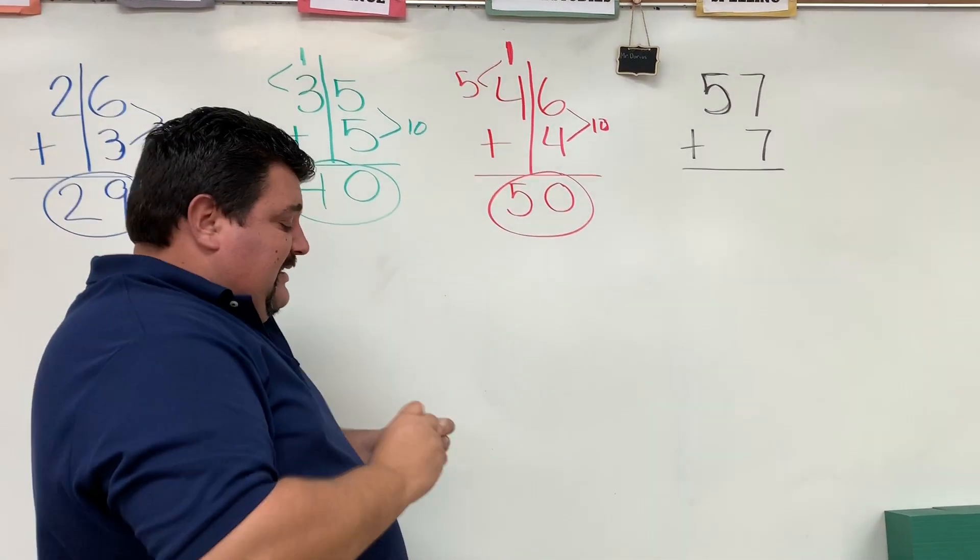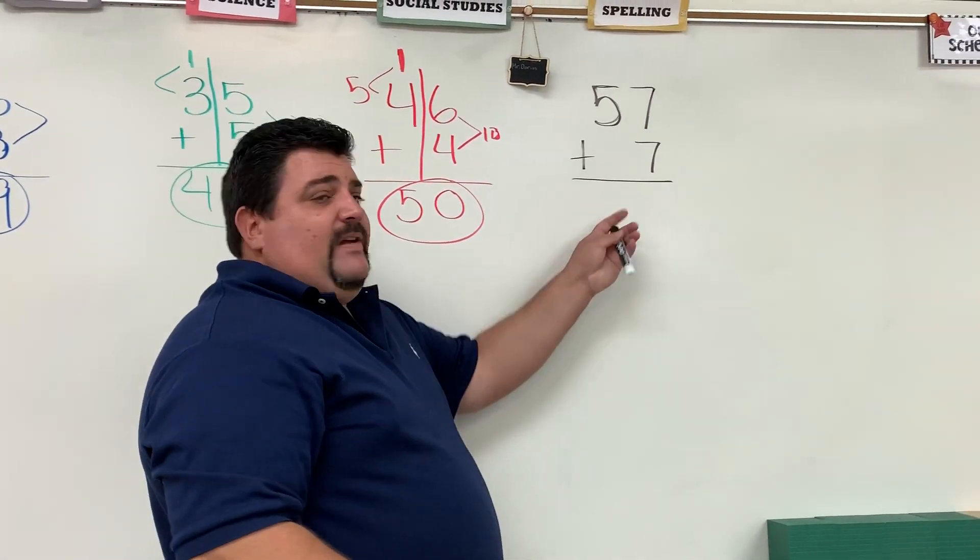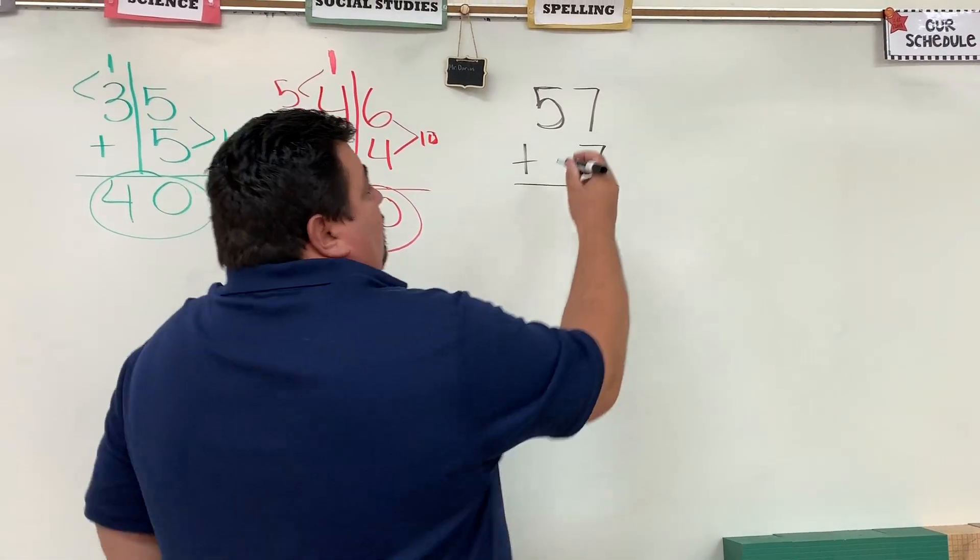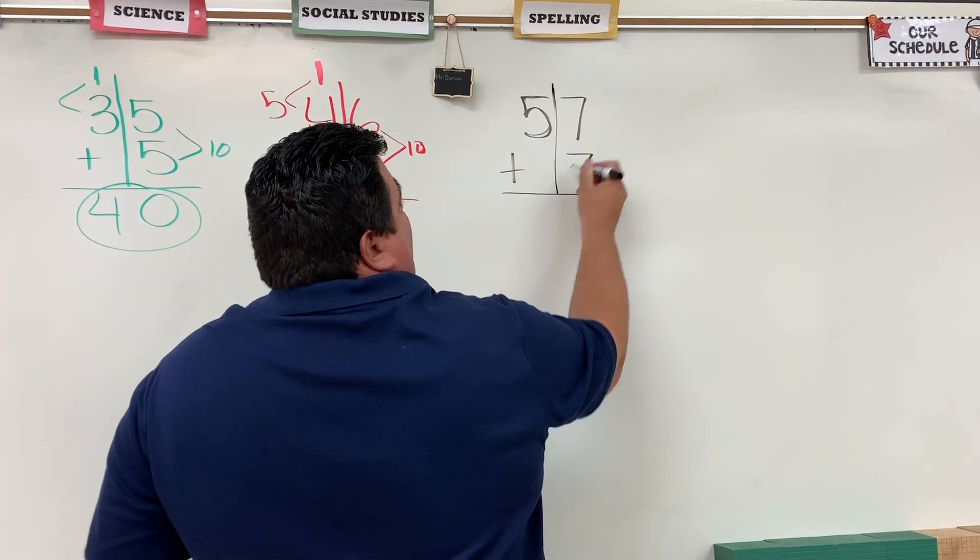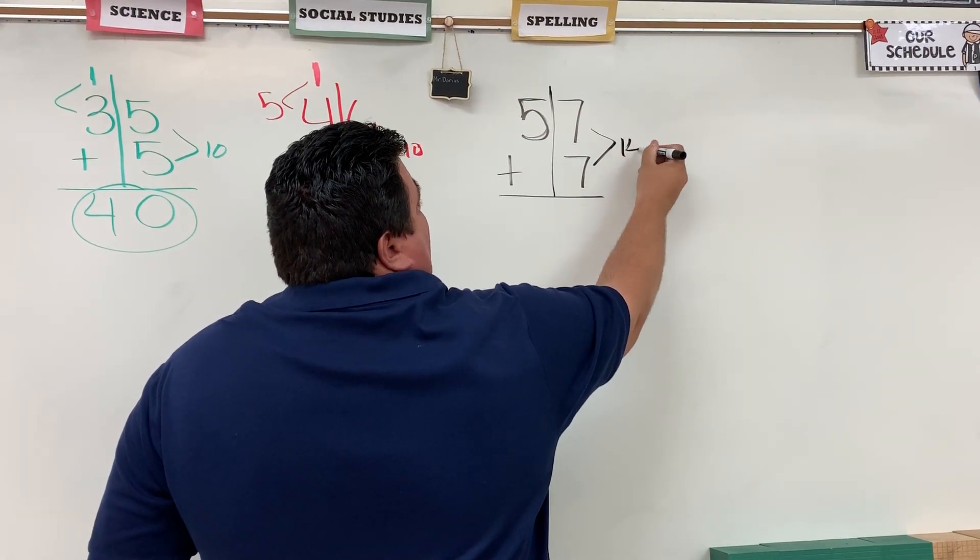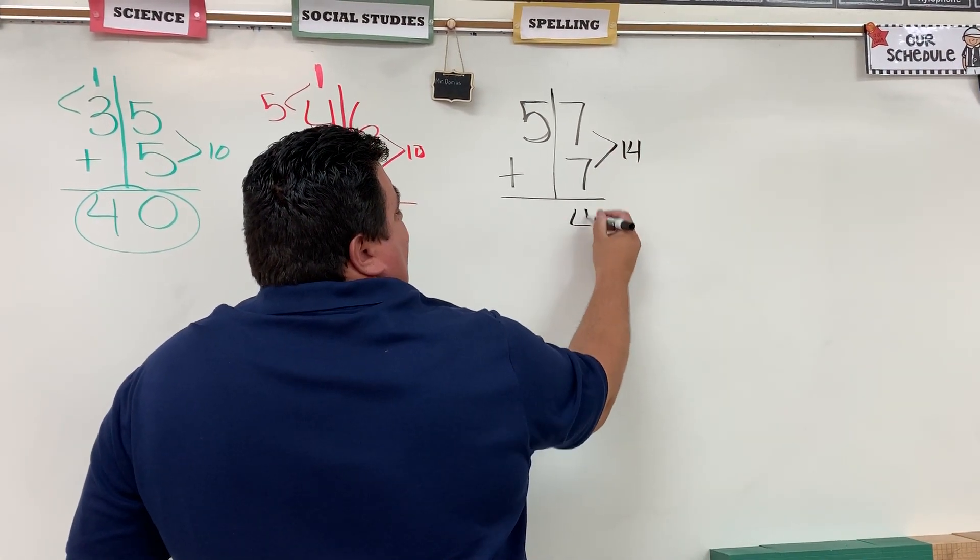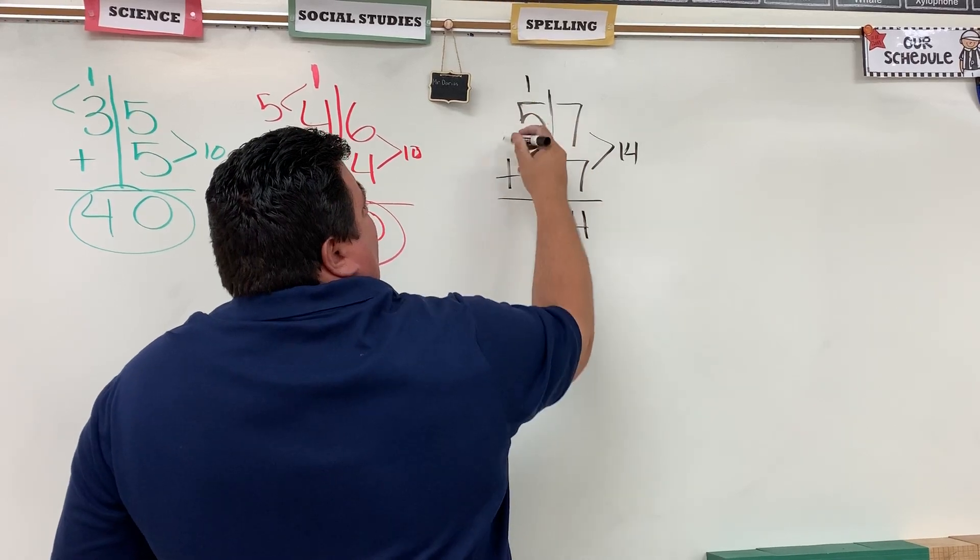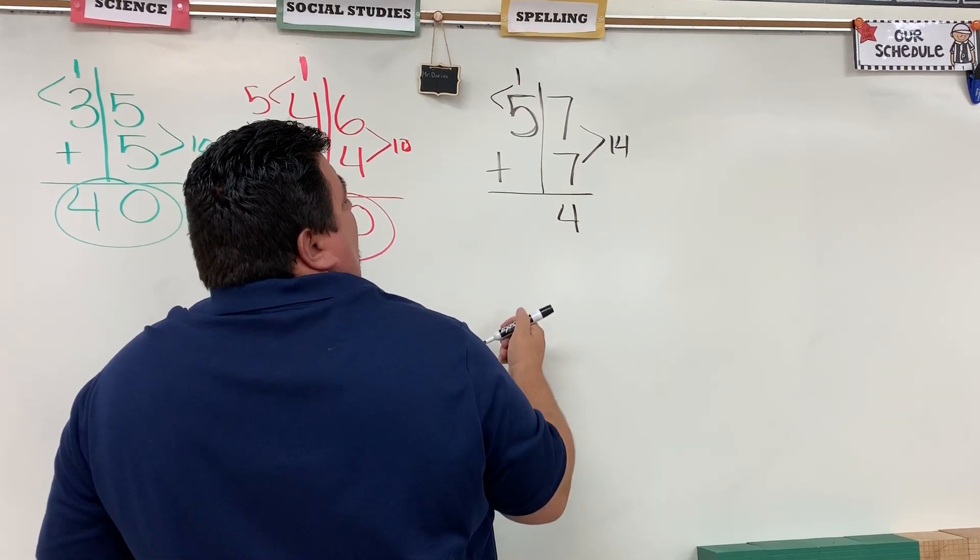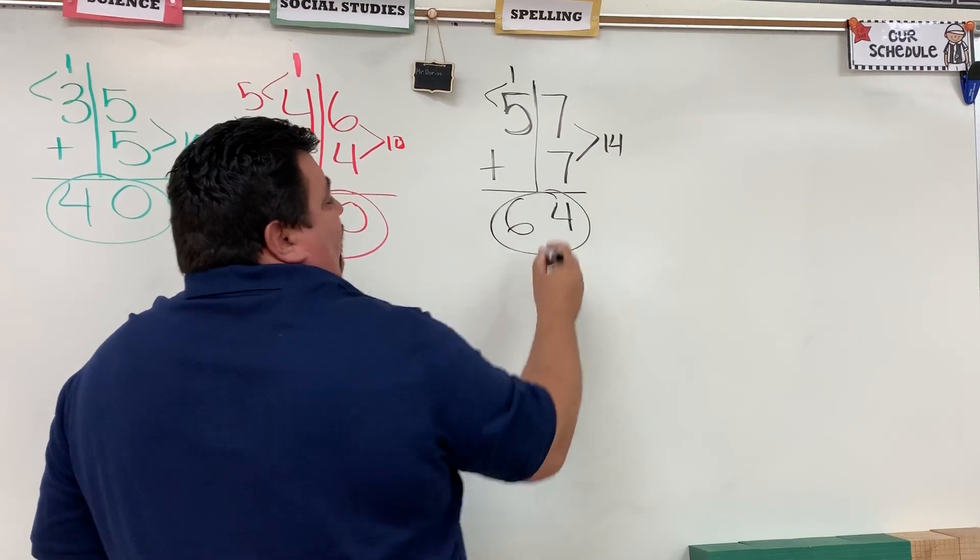Last example will be right over here. Fifty-seven plus seven. I'm going to draw my line down the middle. Seven plus seven is fourteen. I take my ones and I put it here. I take my tens and I put it there. Five plus one is six. My answer is sixty-four.